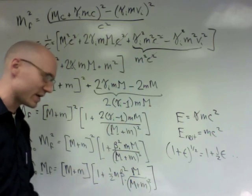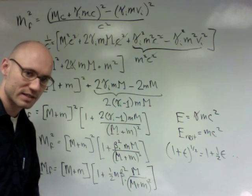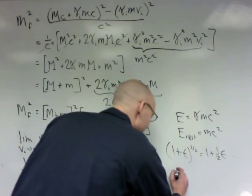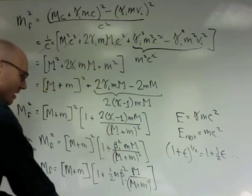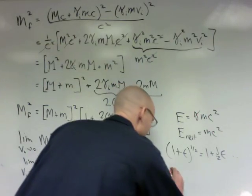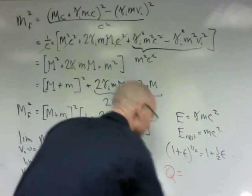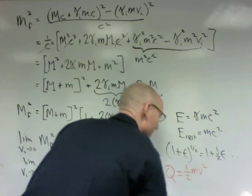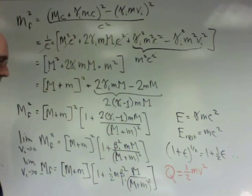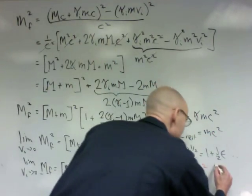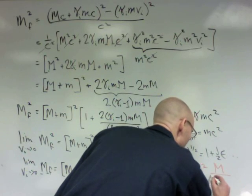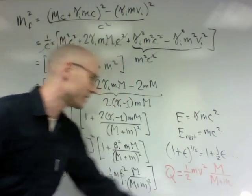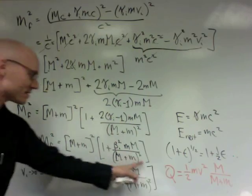This is exactly the expression that we got for the non-relativistic case. We had it in a slightly different form, though. We said in the non-relativistic case, we said that the amount of energy lost to heat was one-half mv squared times m over m plus m. This is the solution we got in the non-relativistic case, and this is the same solution.